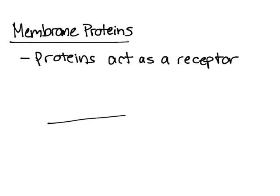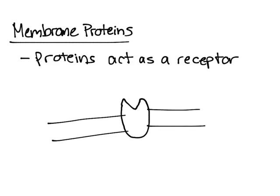Let's think of a membrane like this. We have a protein with a unique shape in it, and something will come in and bind to it called the ligand. Ligands are essentially messenger molecules that activate the receptor. After the receptor is activated, the cell goes on and does a bunch of other stuff, which we'll talk about in a little bit.